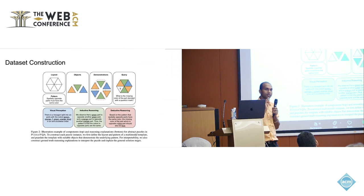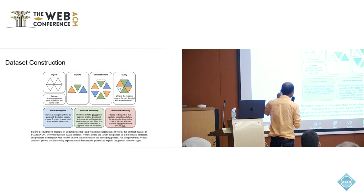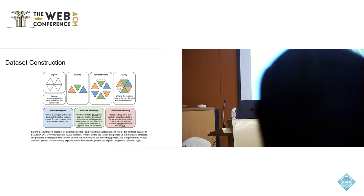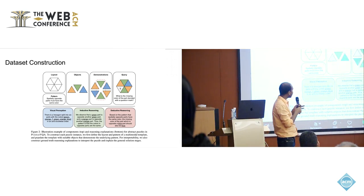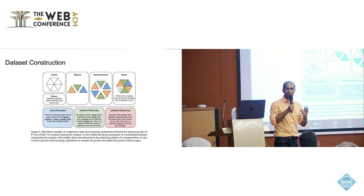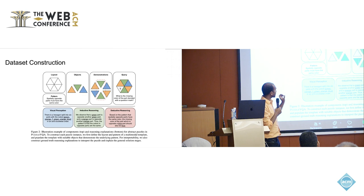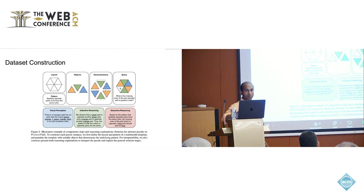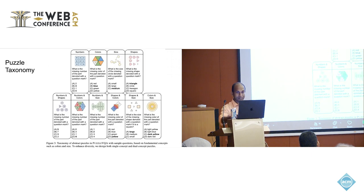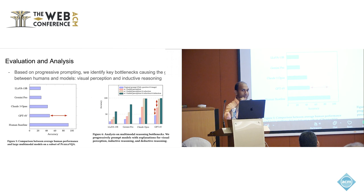This looks like a simple dataset, but the results are surprising. When we asked graduate students and grade six and seven students to do it, they all performed greater than 90% accuracy. Our dataset contains 2,000 samples across 20 puzzle categories, with 100 samples per category.